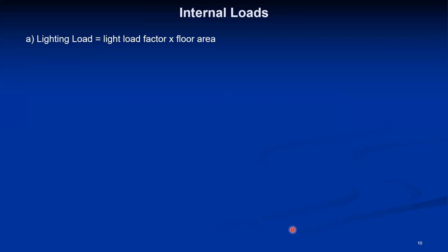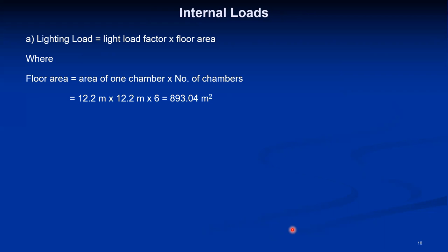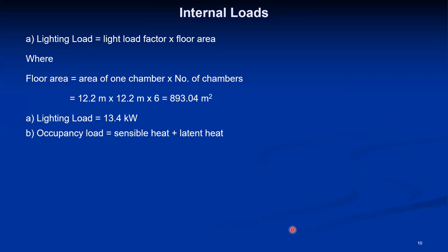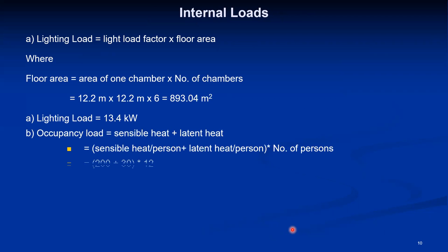The third type of load is internal load. The lighting load factor is given in the problem statement and also available in the design data book. Based on the floor area — area of one chamber multiplied by number of chambers — the total floor area comes around 893.04 square meters, and the lighting load comes around 13.4 kilowatt. The occupancy load, which is sensible heat plus latent heat from 12 persons at 200 Watt sensible and 30 Watt latent each, comes around 2.76 kilowatt. The total internal load comes around 16.16 kilowatt.